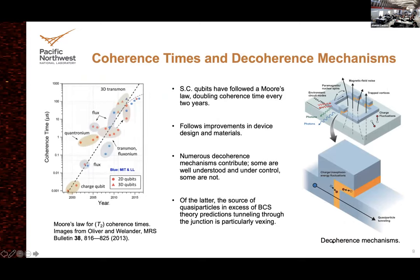Superconducting qubits have been following a Moore's law for at least the last 15 years, approaching 100 microseconds now and exceeding that in state-of-the-art cases. There are lots of understood ways you can lose coherence by exchanging energy with your environment — some well understood, some not. The ones not well understood are the problem of quasi-particles — free electrons, not Cooper pairs — tunneling through the junction. It's not that we don't understand what a quasi-particle does when it goes through; we don't understand why there are so many. The number of quasi-particles is the problem.